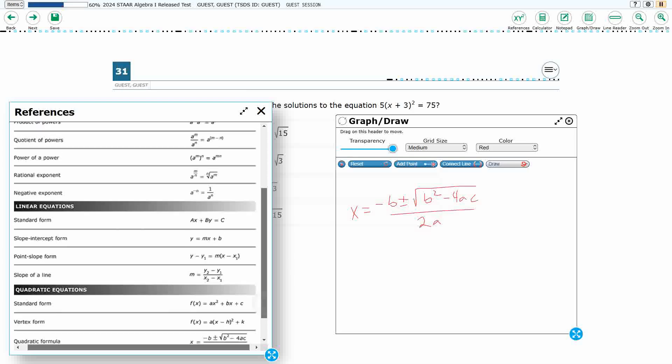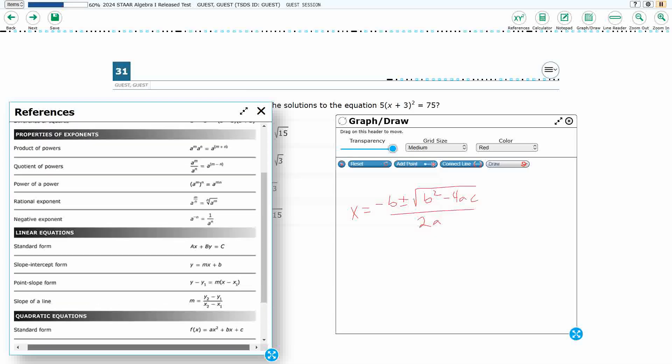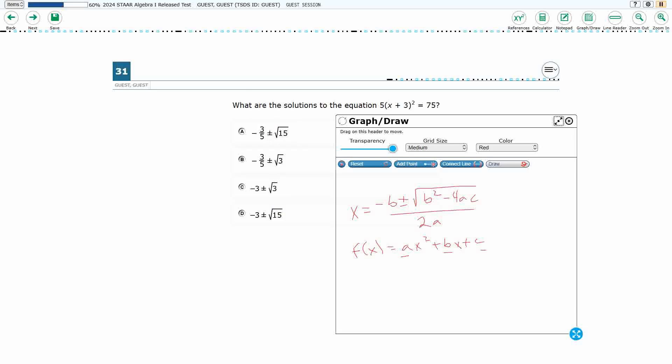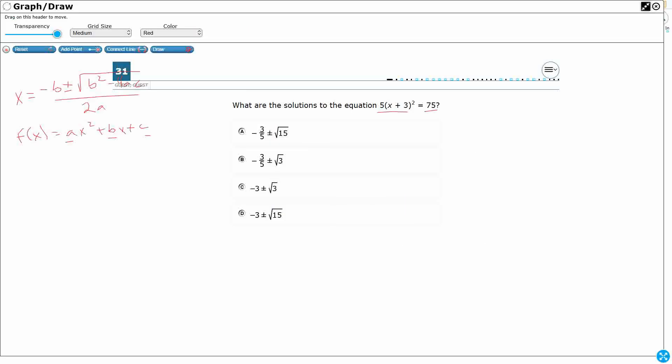The problem is you have to get it to look like the standard form first. What we need here is our standard form, ax squared plus bx plus c, because we need to identify the a, the b, and the c. So we need to take this and we need to make it look like this.